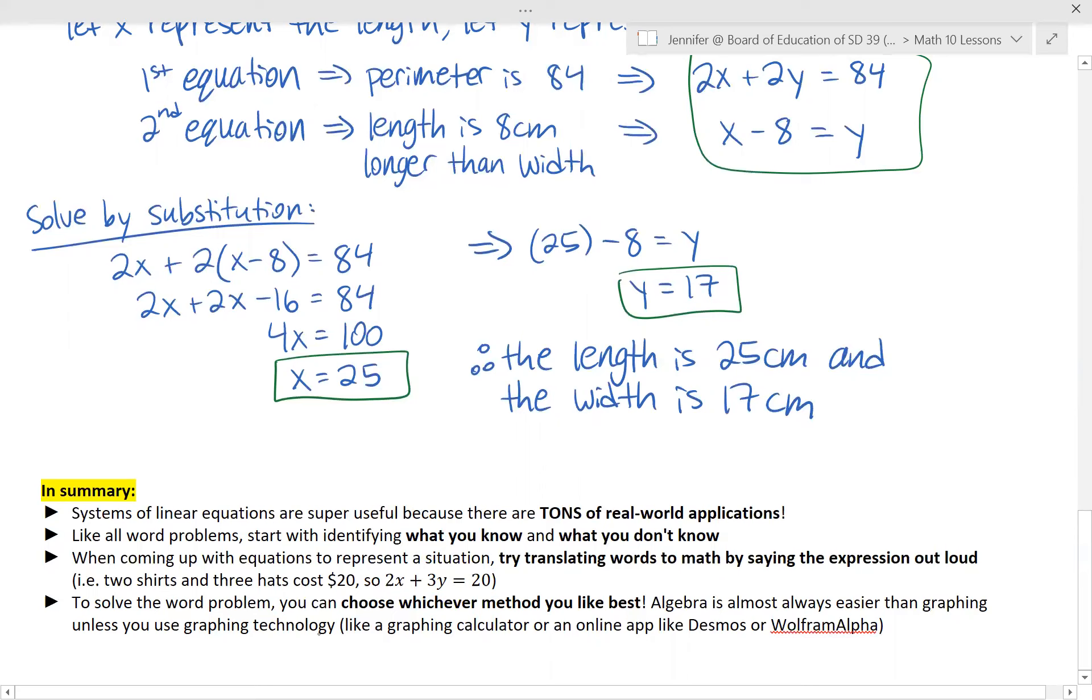And then lastly, to solve the word problem, you can choose whichever method you like best. I solve just using algebra methods in this case because it's almost always easier than graphing. But if you really like graphing or if you have access to graphing technology, then it might be better to do that. So some graphing technology examples would be a graphing calculator or an online application like Desmos or Wolfram Alpha. You're welcome to Google those and try to solve some of your word problems with graphical solutions on either of those sites. So this is how we can set up and solve word problems with systems of linear equations.